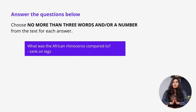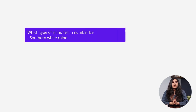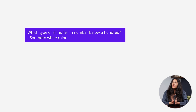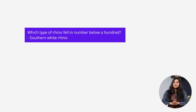Again, with the next question: Which type of rhino fell in number below 100? Southern white rhino. Another short answer, both in line with the word limit and not exceeding three words.